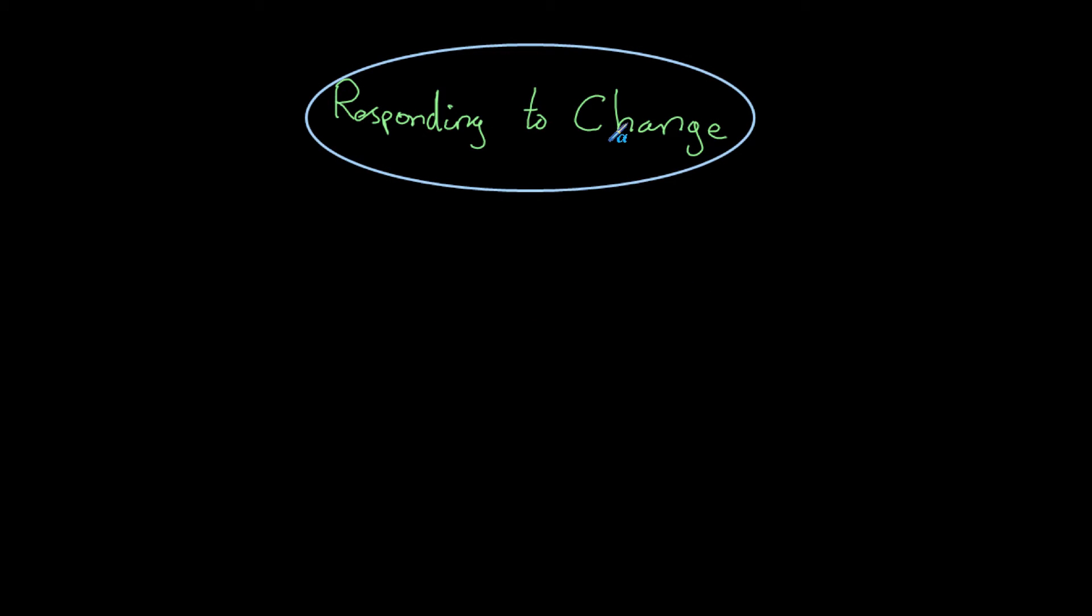Hi, welcome to this first video on responding to change. In this video we are going to have a look at how the nervous system works. The nervous system is one of two systems which we use in order to respond to change. The other one is known as the endocrine system and that will be covered in a later video.